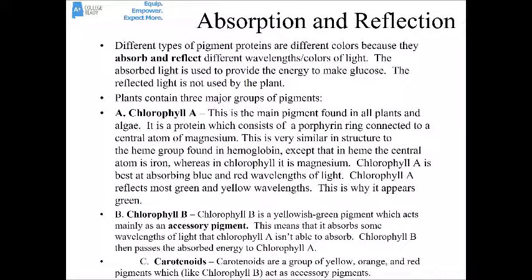Chlorophyll B is slightly more yellowish but still green — it's an accessory pigment that absorbs some wavelengths chlorophyll A can't, and passes those on to certain chlorophyll A molecules. The carotenoids are the yellowish, orange, and red pigments which, like chlorophyll B, are accessory pigments that help the plant capture light energy that chlorophyll A can't.